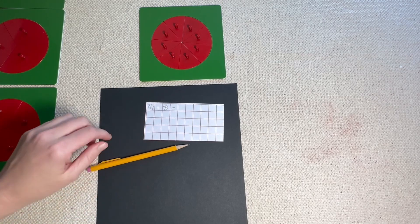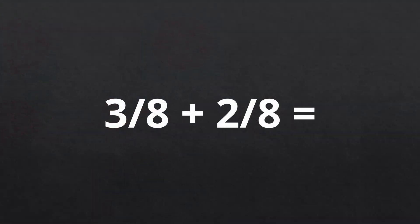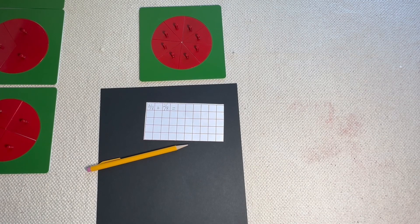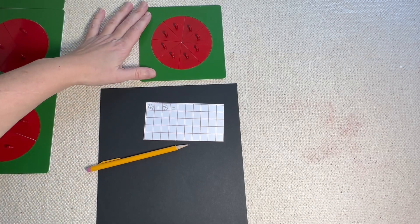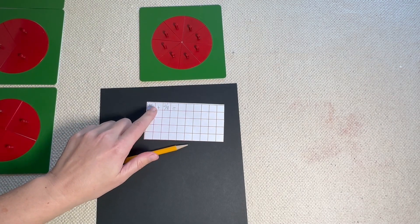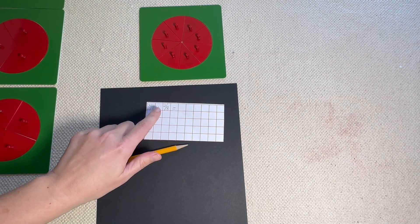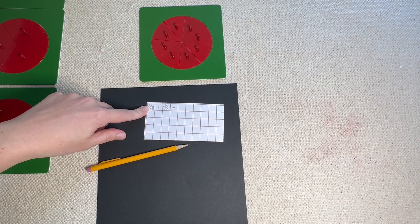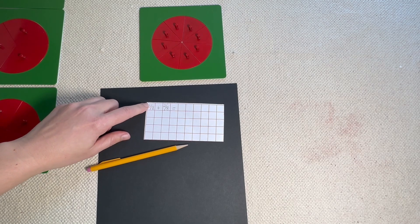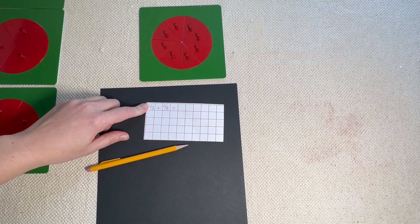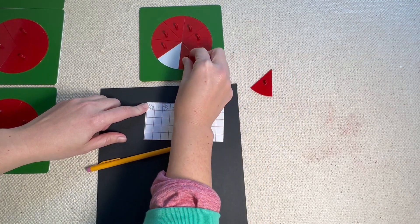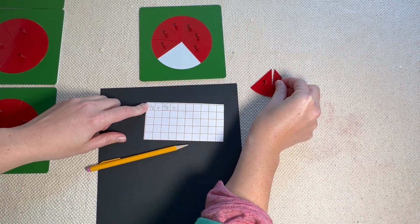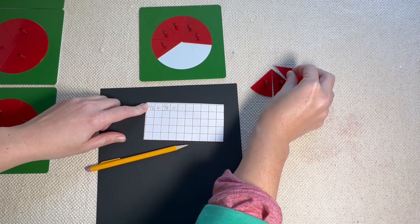Today our equation is going to be 3/8 plus 2/8 equals. In order to do this, we have to find the family of the 8. So here's the family of the 8. And remember, that family number is always going to be on the bottom of our fractions. Now the top number — that's the numerator — is going to tell us how many we're going to be working with. This top number says 3, so let's count out 3: 1, 2, 3.